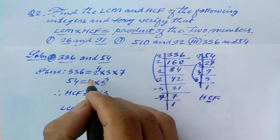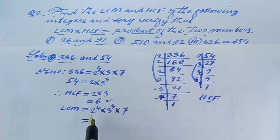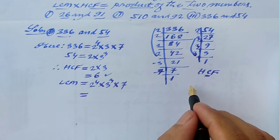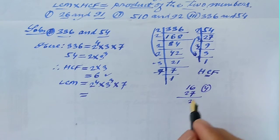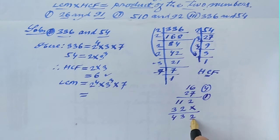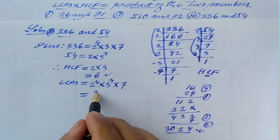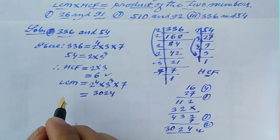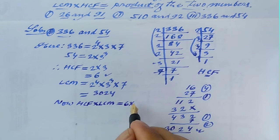Calculating LCM: 2 to the power 4 is 16, and 3 cubed is 27. 16 into 27 equals 432. Then 432 into 7 equals 3,024. So LCM equals 3,024.